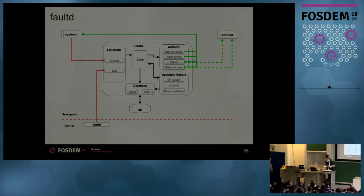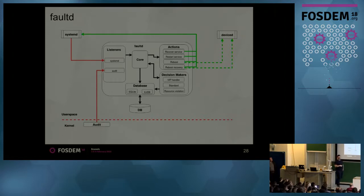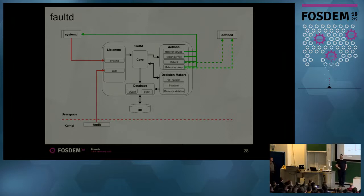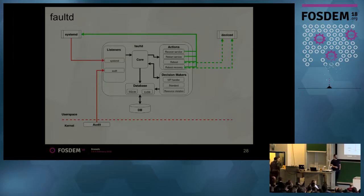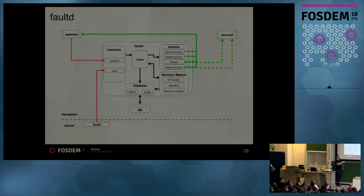So, summary of how FaultD itself looks: you have systemd notification as input to the systemd listener, and audit listener from the Linux kernel. What's important is that before FaultD we didn't use the audit daemon on our platform — we eliminated it because it was slow, it took some space, and no one else used it. We are directly listening to messages from audit. Then we have the core part, which is simply a router for events, plus the database, actions, and decision makers.